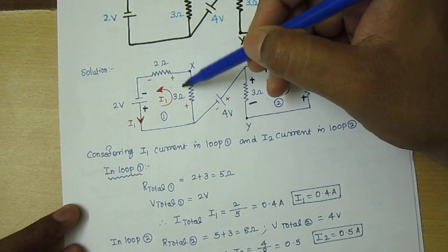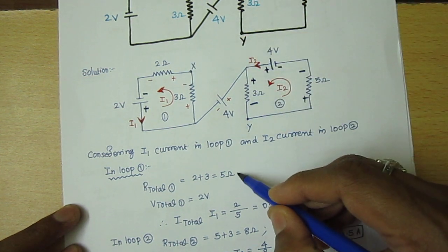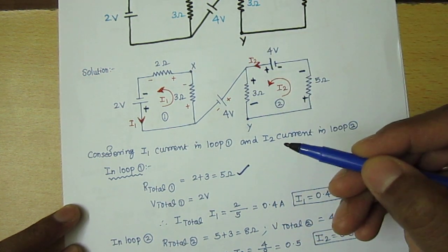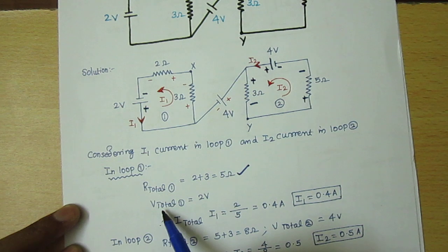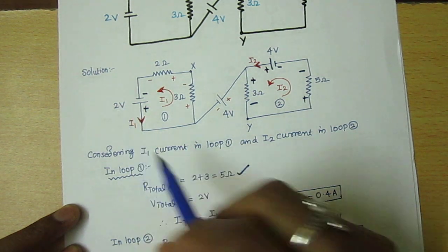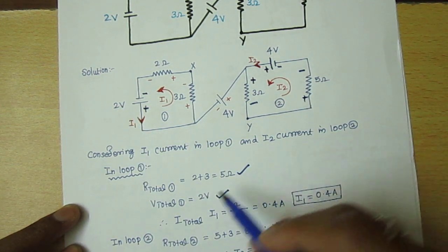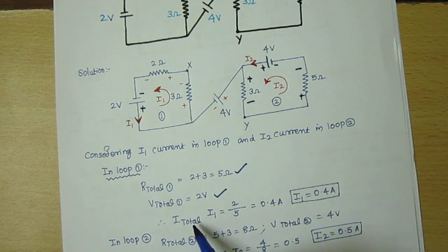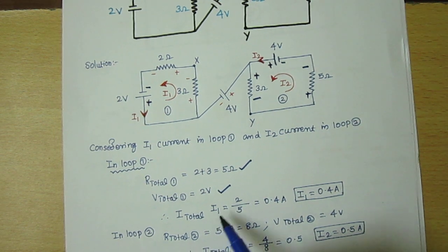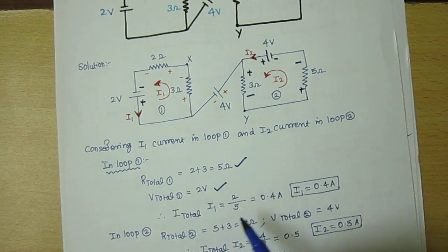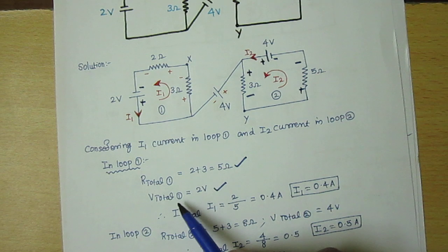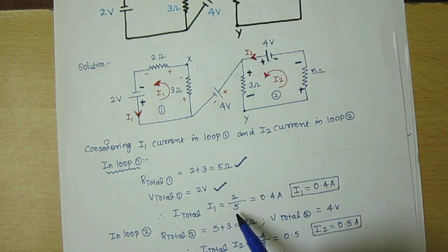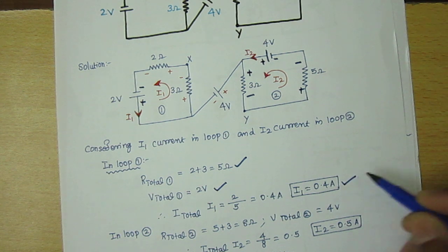R_total means 2 ohms plus 3 ohms, so we get 5 ohms. The voltage given in the question is 2 volt. We already have R and V, so according to Ohm's law, I = V/R. So I1, the current in loop 1, is 2 divided by 5 — that is 0.4 ampere.